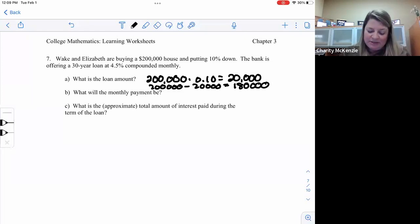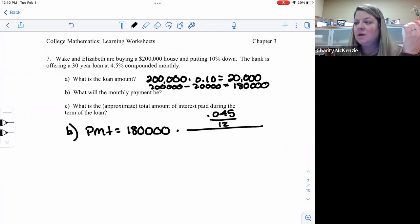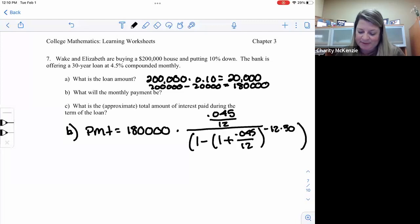So let's figure out our payment. So we know, I'll do it down here. I have to have room. So our payment is going to equal how much we're financing, $180,000. And then we have to do times the rate is 4.5, so 0.045 divided by the 12 and then over our 1 minus 1 plus 0.045 over 12 to the power of negative 12 times 30 years in the denominator. And we should probably have a parenthesis there.